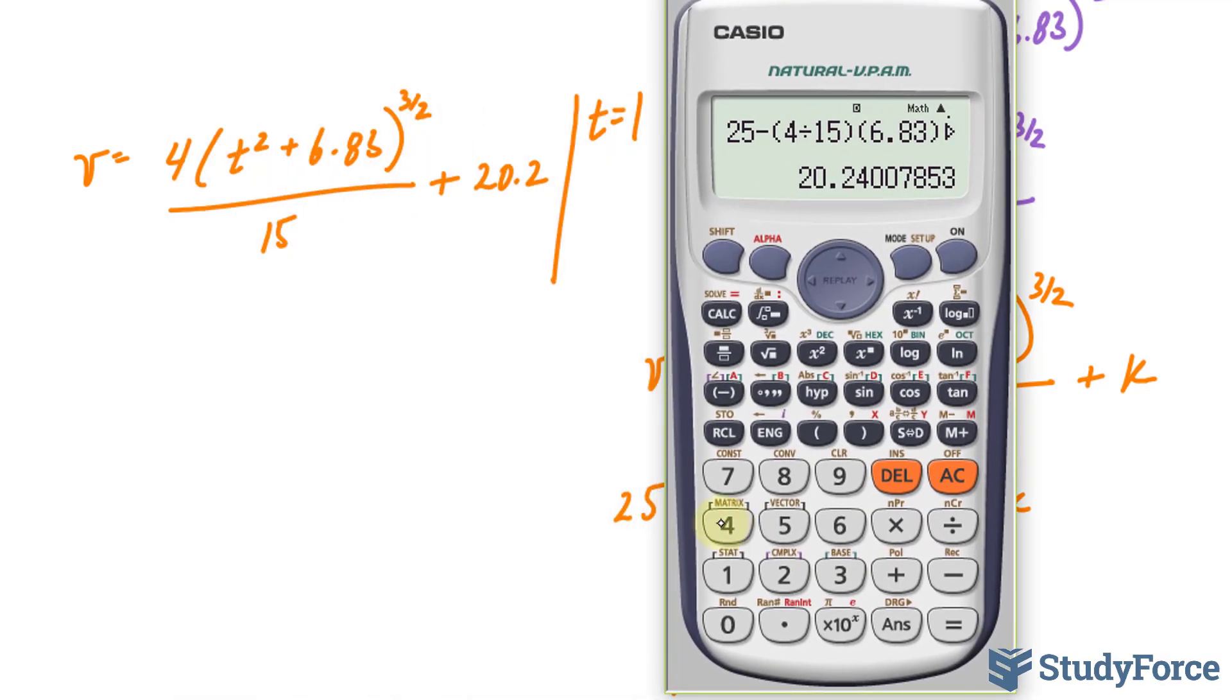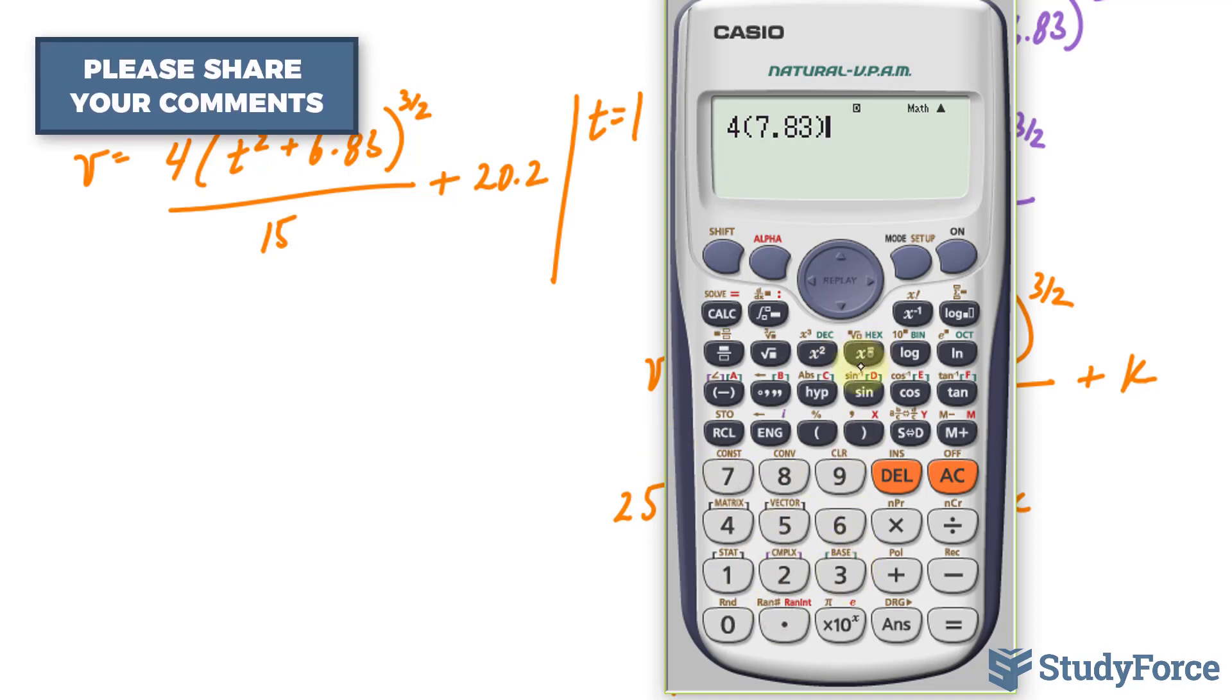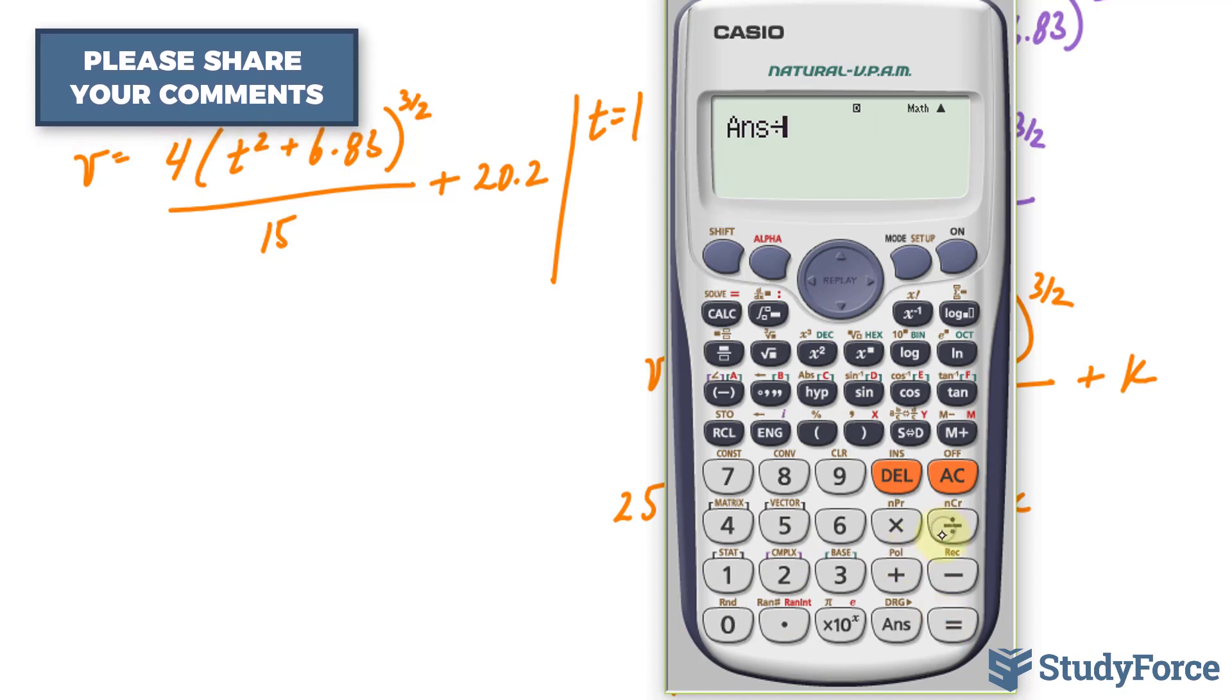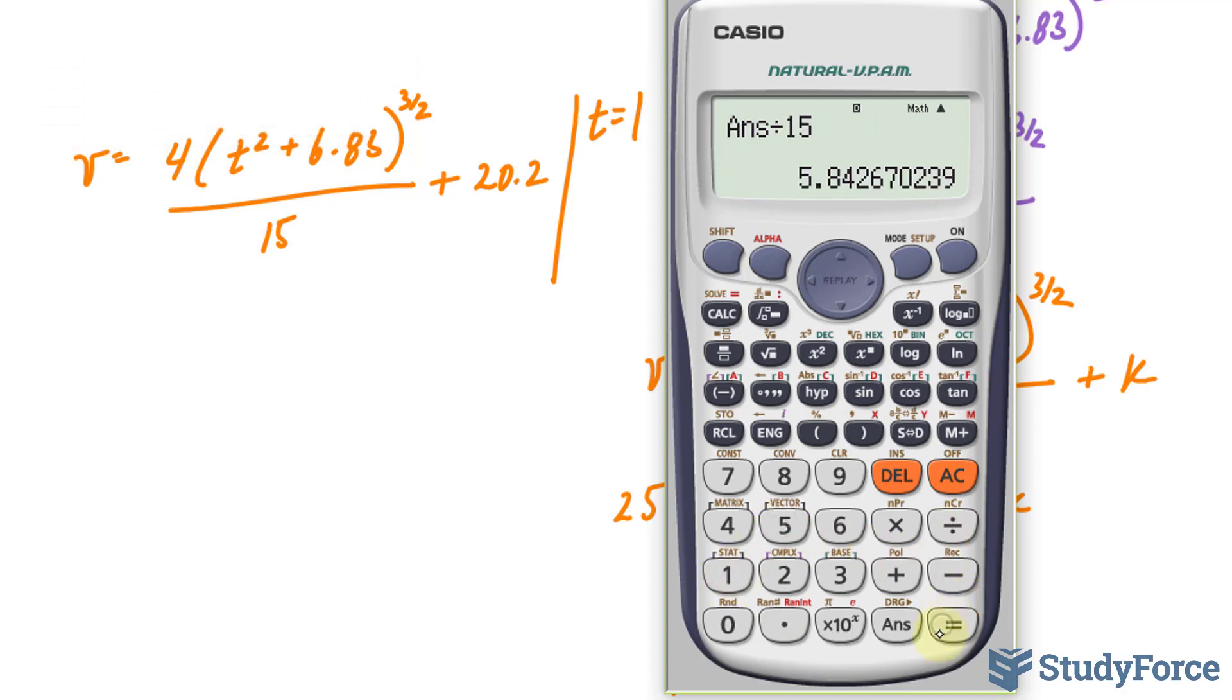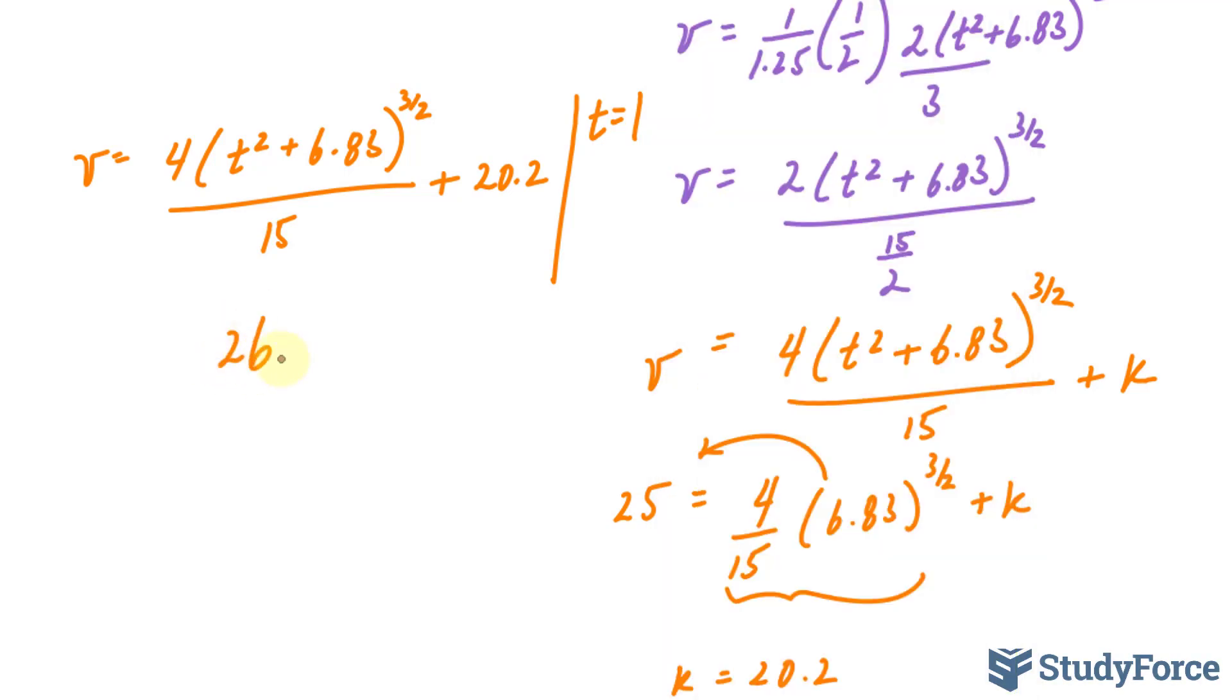4 times 1 to the power of 2 is 1, so 7.83 to the power of 1.5 divided by 15 plus 20.2, and the voltage has to be 26, 26 volts, and there you have it.